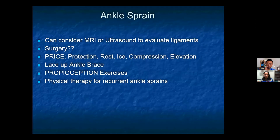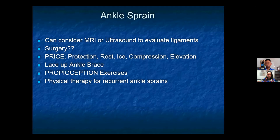For an ankle sprain, you can consider MRI or ultrasound to evaluate ligament integrity. Surgery is usually reserved for chronic instability when non-operative treatment fails. The mainstay of treatment is PRICE: protection, rest, ice, compression, and elevation. A lace-up ankle brace is recommended, particularly for sporting activities. Proprioception exercises are the most important treatment — they help regain balance and prevent re-injury. Physical therapy helps restore proprioception, stability, and muscle strength.